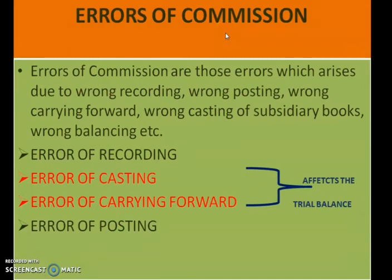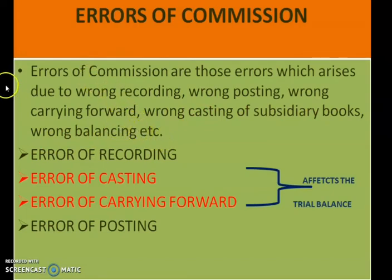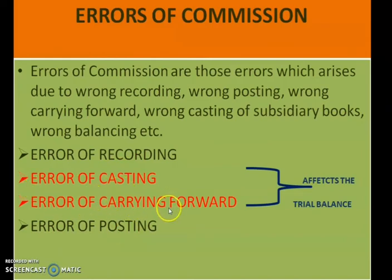Next is error of commission. Errors of commission are those errors which arise due to wrong recording, wrong posting, wrong carry forward, wrong casting of subsidiary books, and wrong balancing. Examples include error of recording, error of casting, error of carrying forward, and error of posting. Errors of casting and carrying forward will affect the trial balance, while errors of recording and posting will not affect the trial balance.